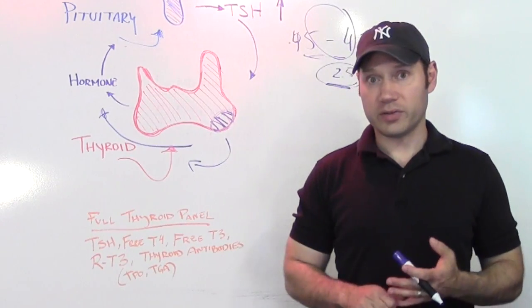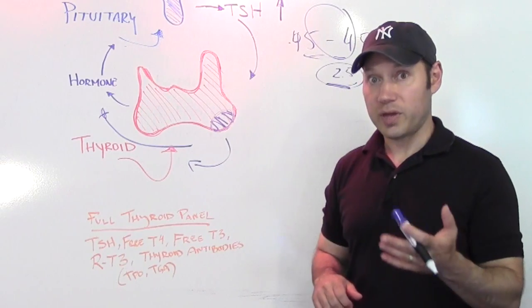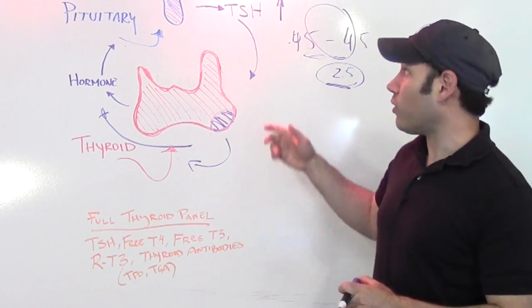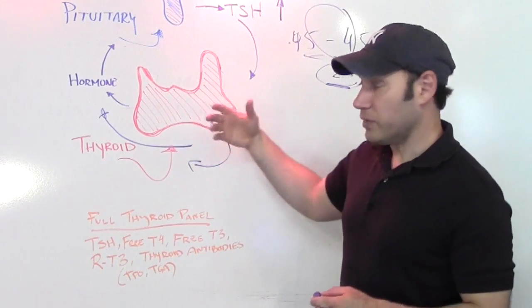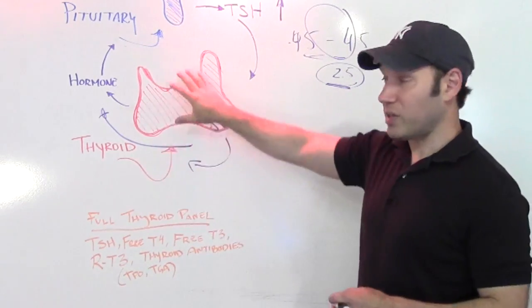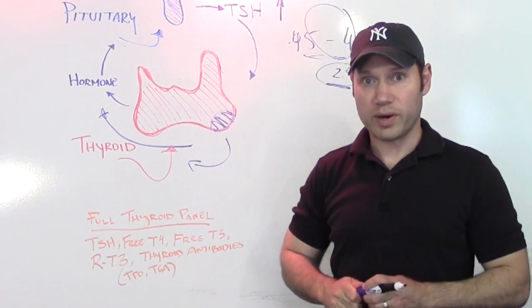And in fact, thyroid antibodies may be the first sign that there's a problem. Those thyroid antibodies could show up before any of the other markers sort of go haywire. It could be a situation where you've got elevated antibodies, but there's not enough tissue destroyed yet where some of the other markers sort of go out of whack.